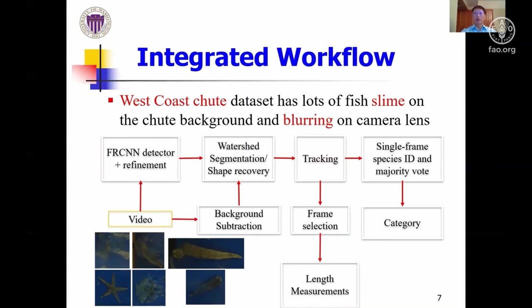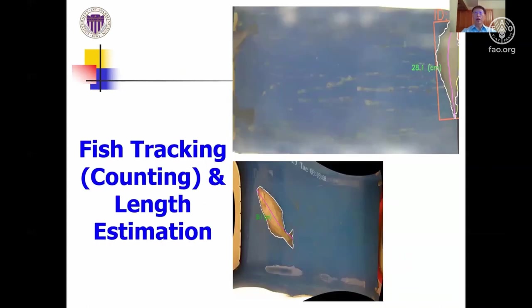We combine deep learning algorithms with many computer vision techniques along with temporal consistency of video object tracking, to overcome errors caused by misdetection, unreliable segmentation, and tracking. Here are two qualitative examples of fish counting and length estimation from West Coast data.